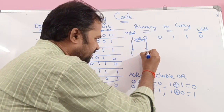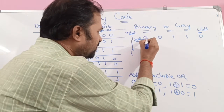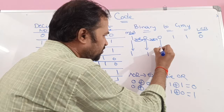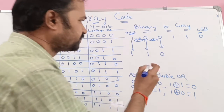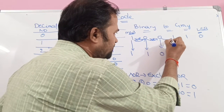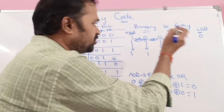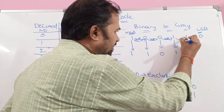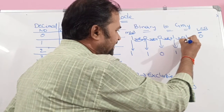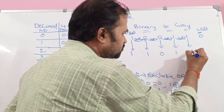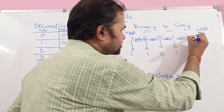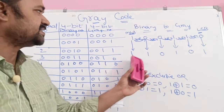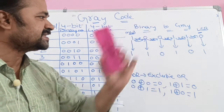So we write that 1 here. Next let us perform XOR on these 2 bits: 0 XOR 0 is 0. Next, XOR on these 2 bits: 0 XOR 1 means 1. Next XOR on these 2 bits: 1 XOR 1 means 0. So this is the gray code for the binary number 100110.